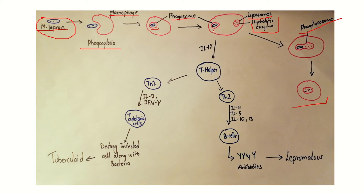In the case of Mycobacterium leprae, the scenario is different because this bacteria has its own defense mechanism — it prevents the fusion of the phagosome and the lysosome. It does this by inhibiting certain calcium signals responsible for fusion, or by inhibiting the mobilization of certain proteins responsible for phagosome-lysosome fusion. So there is no phagolysosome formation, the bacteria is safe, and it can multiply freely inside the macrophage.